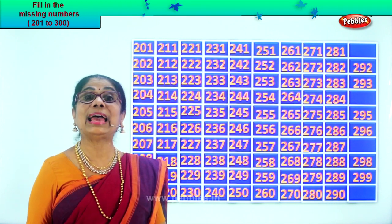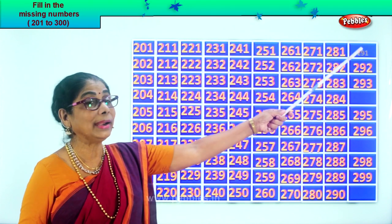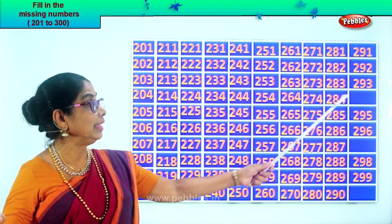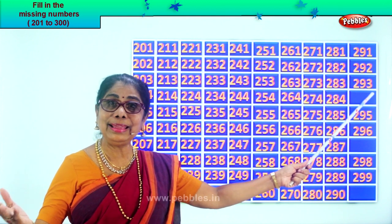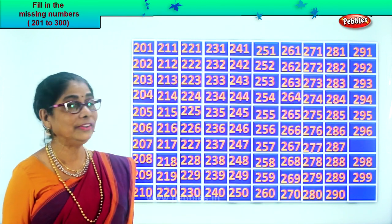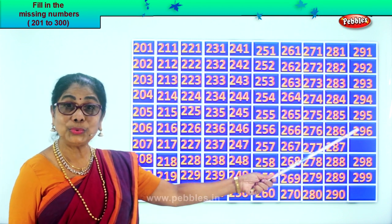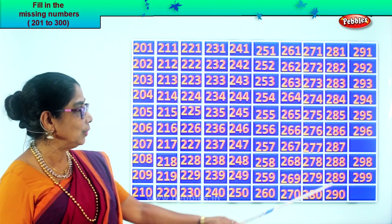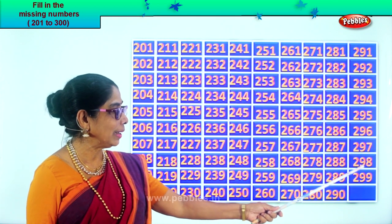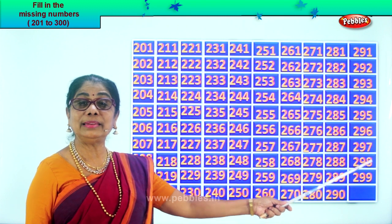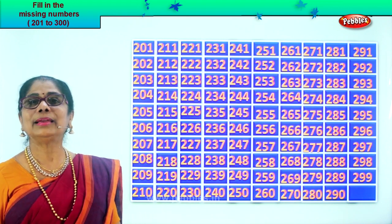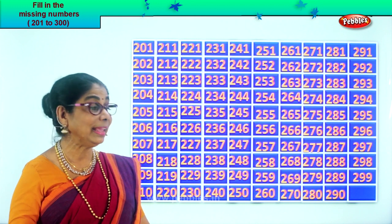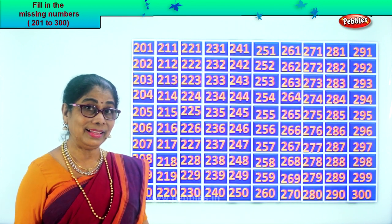After ninety — ninety-one. So we write two hundred and ninety-one. Two hundred and ninety-two. Two hundred and ninety-three. After ninety-three — ninety-four. Two hundred and ninety-four. Two hundred and ninety-five. Two hundred and ninety-six. After ninety-six — ninety-seven. Two hundred and ninety-seven. Two hundred and ninety-eight. Two hundred and ninety-nine. After ninety-nine — one hundred, but here two hundred and ninety-nine and one more gives three hundred. Three hundred.